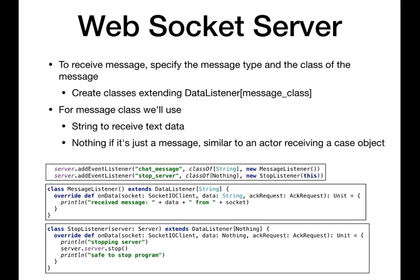Now how does our server actually behave when we get messages? We're listening for messages from a client. When we receive messages of each type, we should be thinking similar to the actor receive method — if I get a message of this type, do this; message of this type, do this. The structure looks more like what we did with ScalaFX GUIs where we're creating listeners and instantiating listener classes. So when I receive a message of type chat message, what do I do? When I receive a message of type stop server, what do I do?